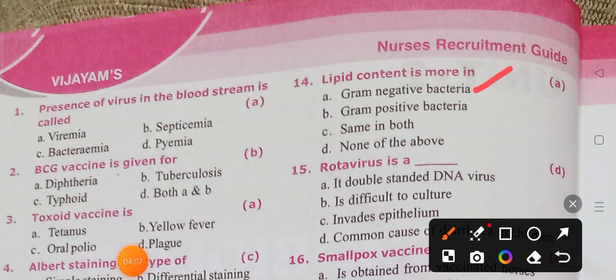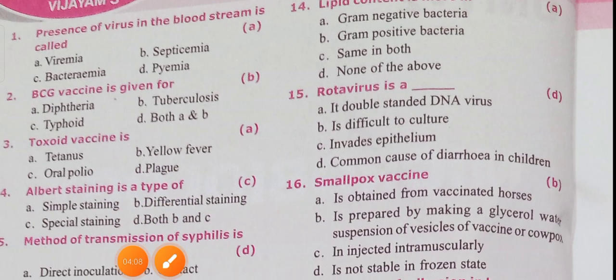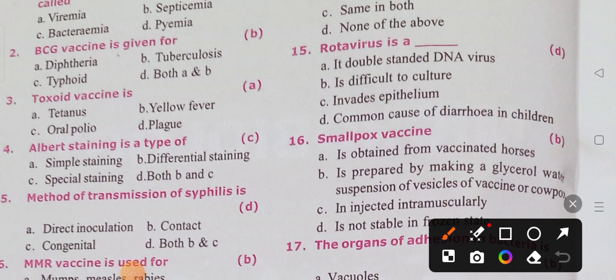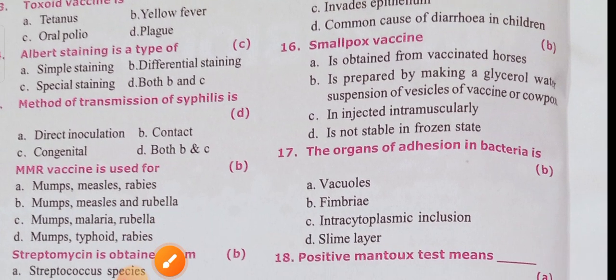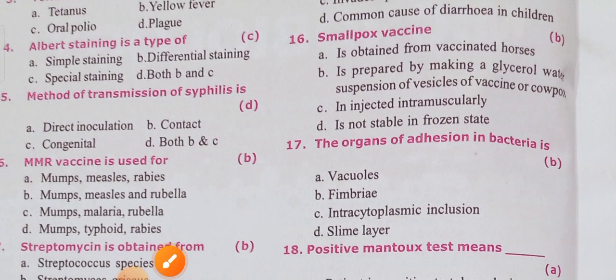Rotavirus is a common cause of diarrhea in children — option D is the correct answer. Rotavirus is a common cause of diarrhea in children.